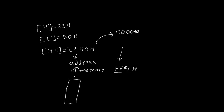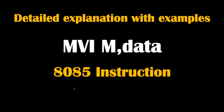We can see this as a memory which has the range from 0000H to FFFFH, and somewhere in between that there will be the 2250H address. On this 2250H address, we need to transfer data. So MBI data simply means it will transfer that 8-bit data into that memory.